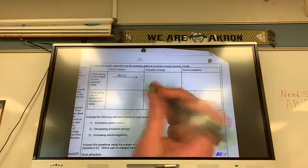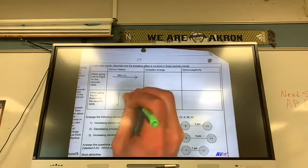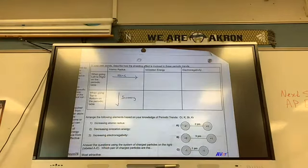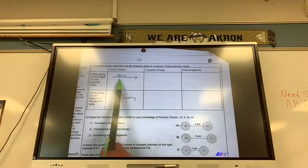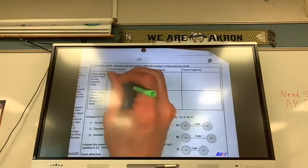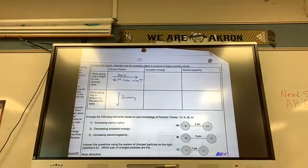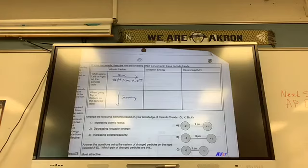When you're going top to bottom, what's happening to my shielding? It's increasing. So as I'm moving left to right, the shielding is staying the same, but what is increasing? Your what? The number of protons. Your number of protons slash core charge is going up. Therefore, what's happening to your atomic radius as you move to the right on the periodic table? It's getting smaller. The same amount of shielding, but more pull.